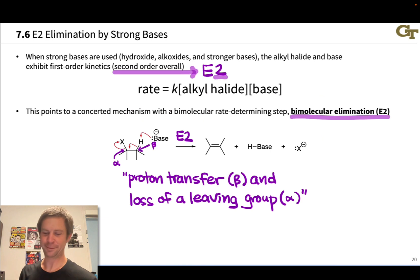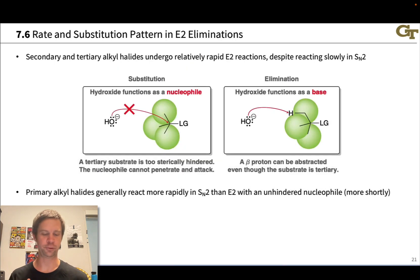The strong bases listed at the top of this slide, hydroxide and alkoxides, for example, we've already seen these acting as nucleophiles in SN2 reactions. So this may raise the question in your mind, when do these anionic species act as Bronsted bases and react in E2 elimination as opposed to SN2 substitution? This depends on the substitution pattern of the alkyl halide and specifically how sterically bulky it is. Secondary and tertiary alkyl halides undergo relatively rapid E2 eliminations and react slowly in SN2, because of the steric bulk around the alpha carbon, around the carbon that would have to accept the electron pair in an SN2 substitution.